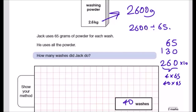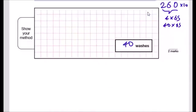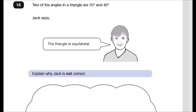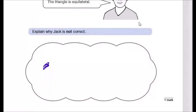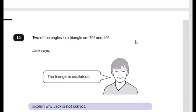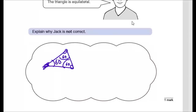Question 14: two angles in a triangle are 70° and 40°. Jack says it's equilateral. Explain why Jack is not correct: an equilateral triangle has all angles equal to 60°. Since the angles here are 70° and 40°, they are not all 60°, so the triangle cannot be equilateral.